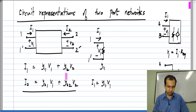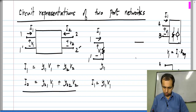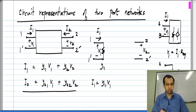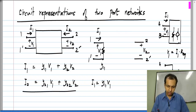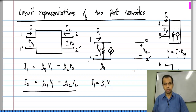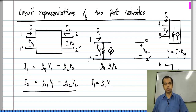We have a second part: Y12 times V2. Port 2 with terminals 2 and 2-prime has V2 across it. So there is a current drawn in port 1 in response to a voltage in port 2. This is clearly a dependent source — a voltage-controlled current source — whose value is Y12·V2.